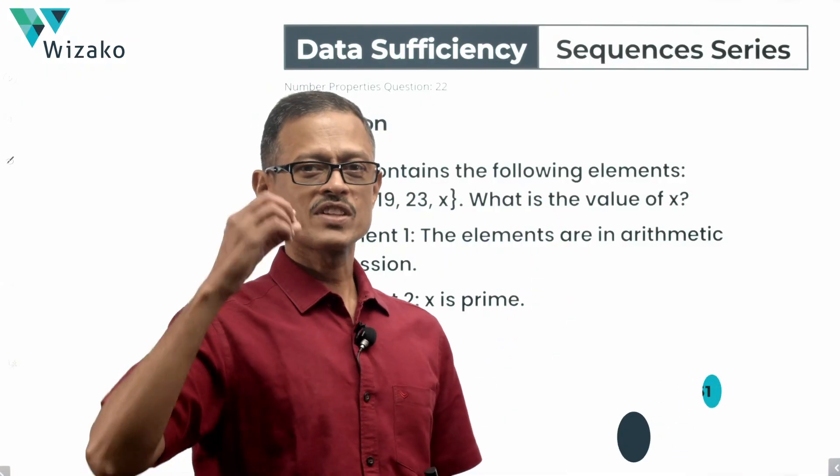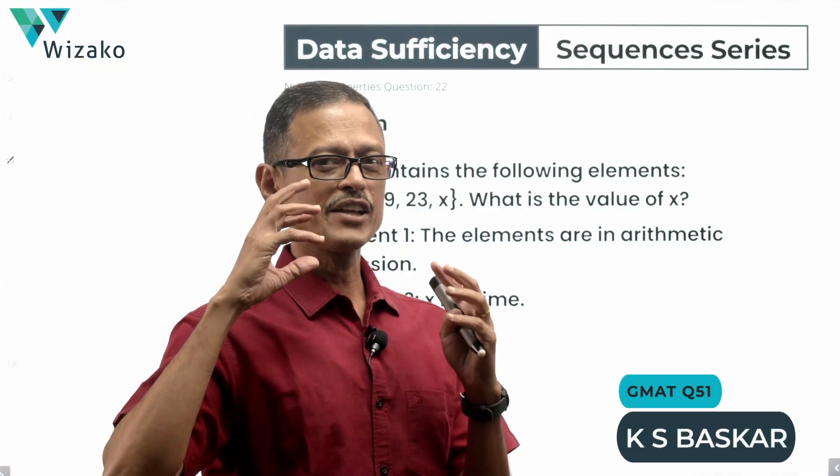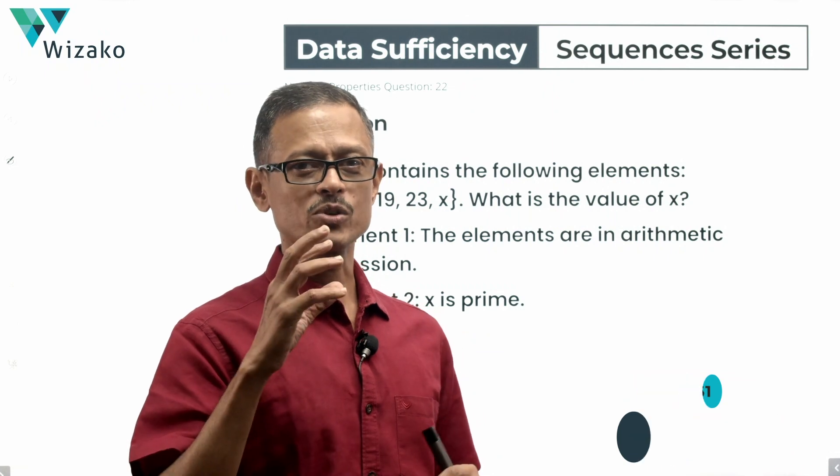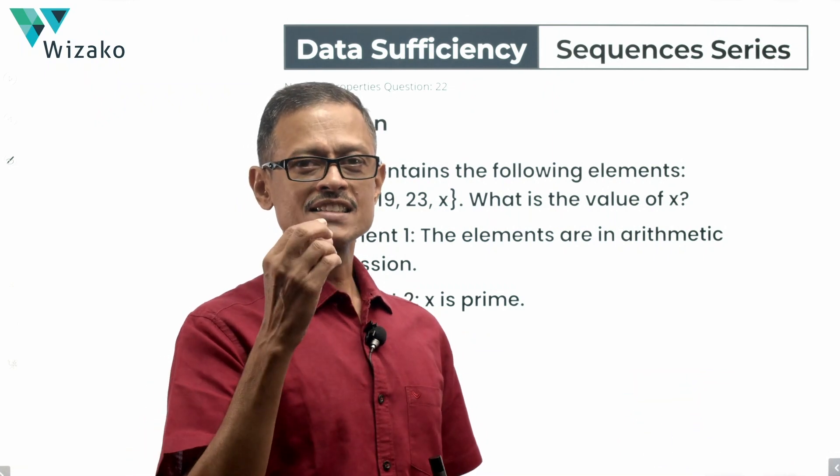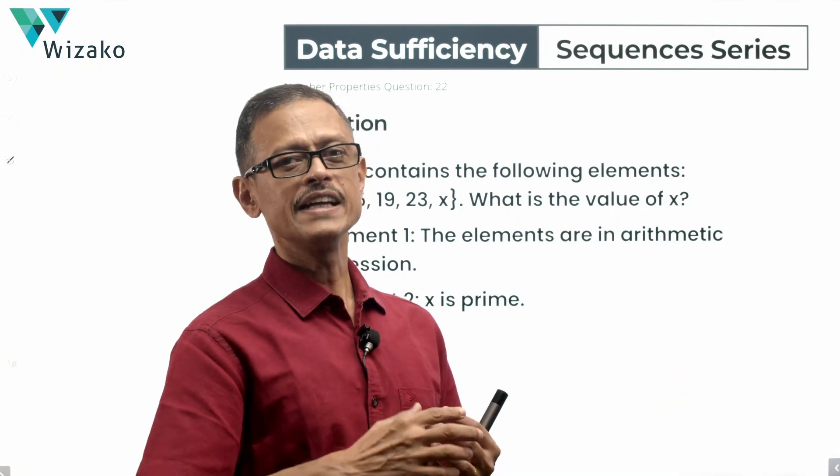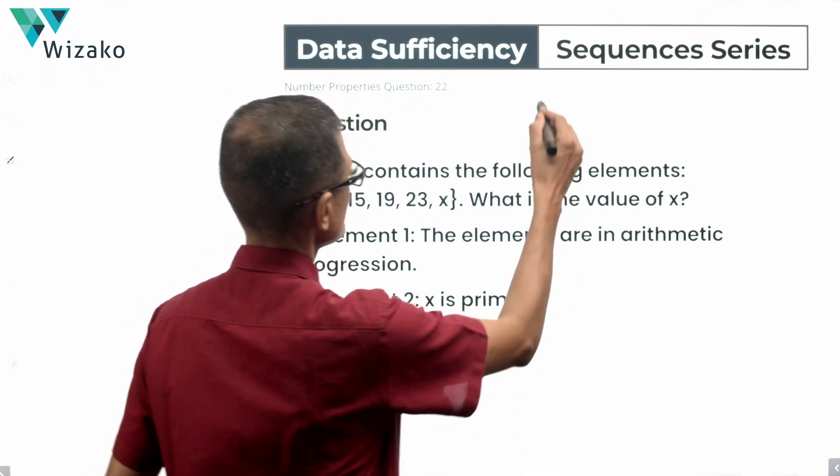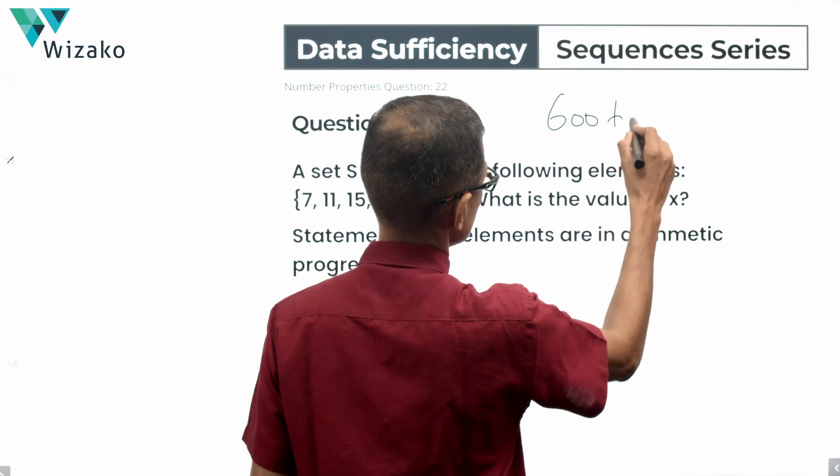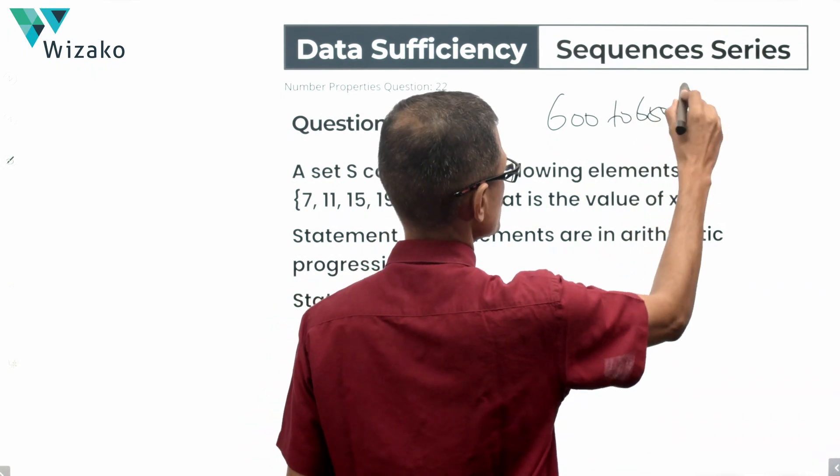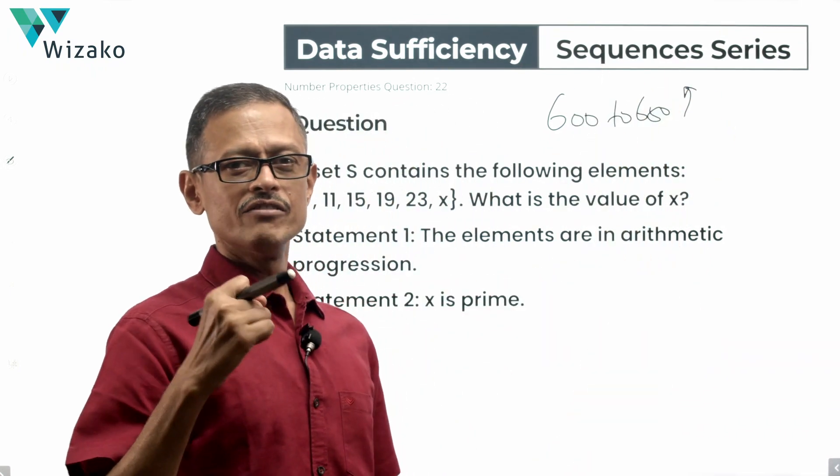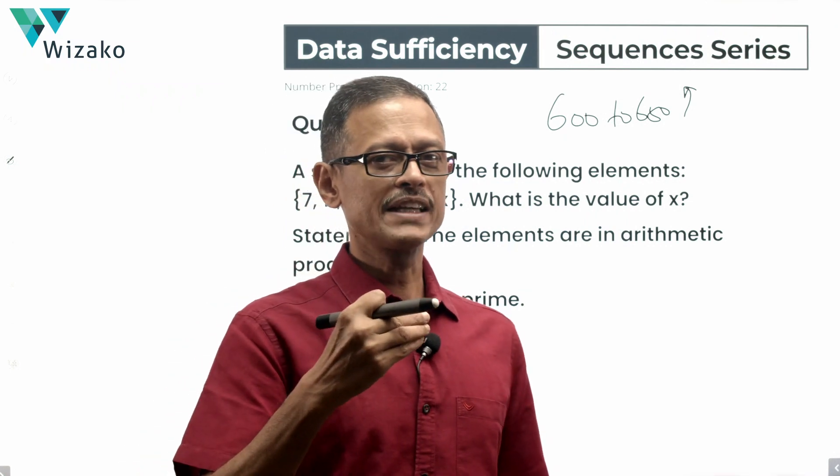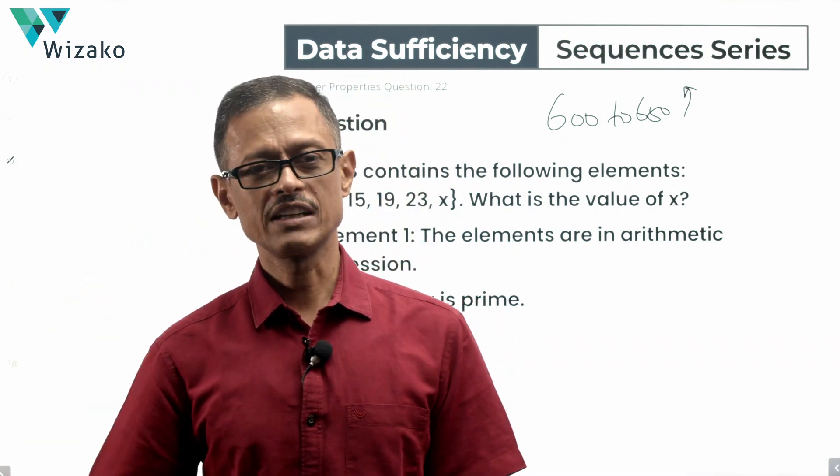I like this question a lot because it helps us learn some very fundamental things about how to approach data sufficiency questions. It tells us what we should not do in the way we think about questions or information given in the question. Classify the question as a GMAT 600 to 600T level question. Not tough at all conceptually, but we need to be very watchful about not making any unwanted assumptions while solving questions.